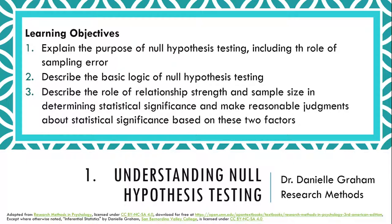The learning objectives for this section are: 1. Explain the purpose of null hypothesis testing, including the role of sampling error. 2. Describe the basic logic of null hypothesis testing. 3. Describe the role of relationship strength and sample size in determining statistical significance and make reasonable judgments about statistical significance based on these two factors.